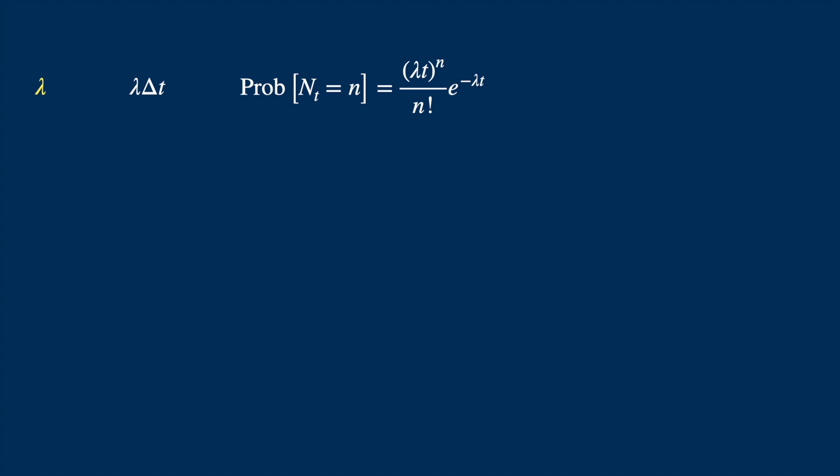Now this is the probability density, which is like the differential of the probability measure, where P underscore lambda just means that this is the probability measure associated with the process with parameter lambda.